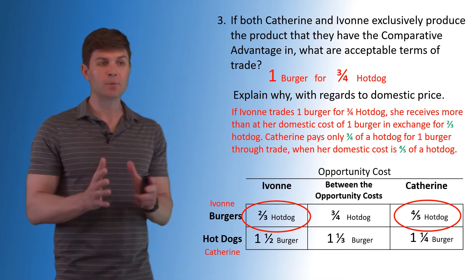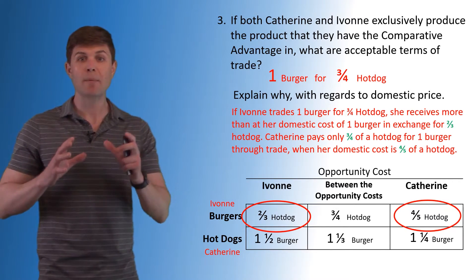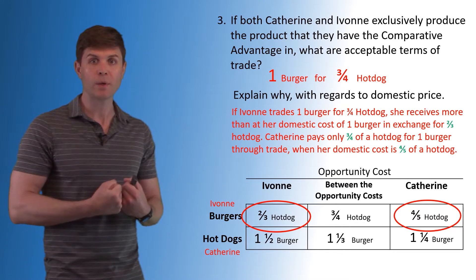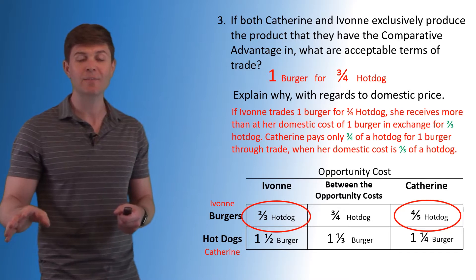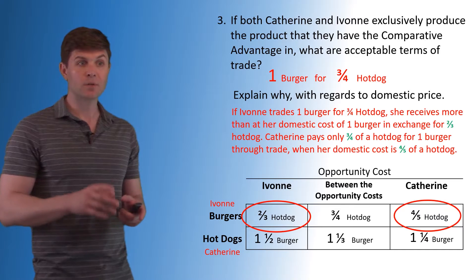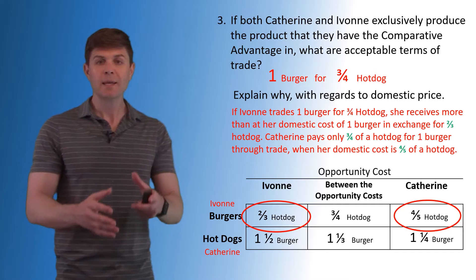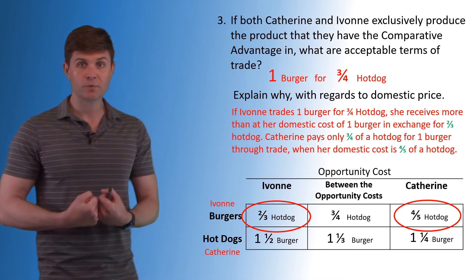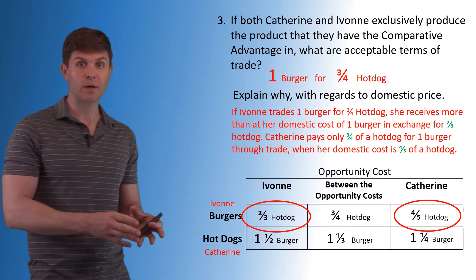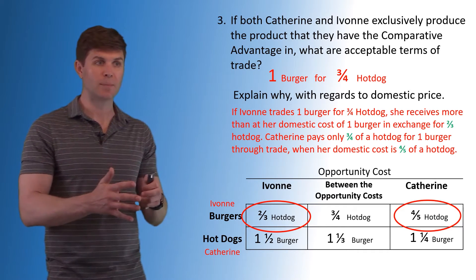Catherine's opportunity cost of a hamburger is four-fifths of a hot dog. She could give up four-fifths of a hot dog to produce one burger at any point, so she's not willing to pay four-fifths or anything higher because she could do it herself. Catherine pays only three-quarters of a hot dog for one burger through trade when her domestic cost is four-fifths. So Catherine is getting more than she would producing it herself, and Yvonne is getting more trading than she would on her own. Both of them benefit. This is why we have mutually beneficial trade when it falls between the opportunity cost.